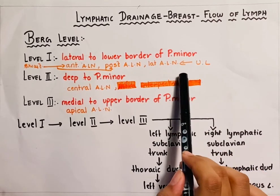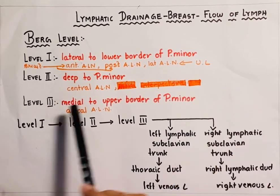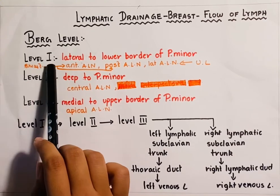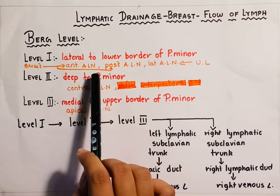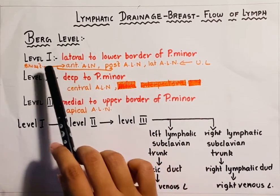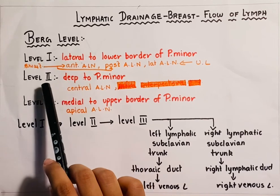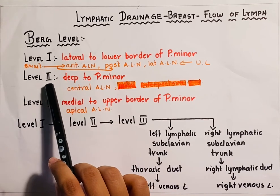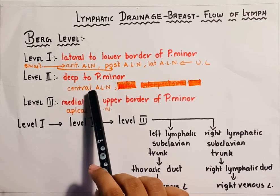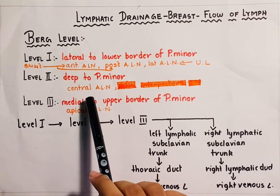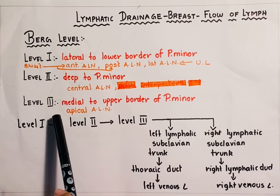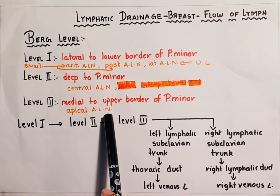Therefore, the lymph from the upper limb and the breast region is drained into the level 1 group of lymph nodes, which include the anterior, posterior and lateral group of axillary lymph nodes. The lymph from level 1 is then drained into the level 2 group of lymph nodes, which include the central group of axillary lymph nodes. From the level 2 group it is drained into the level 3, which are the apical group of axillary lymph nodes.